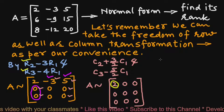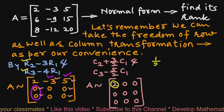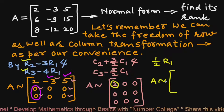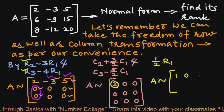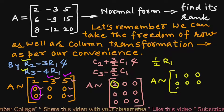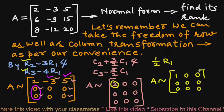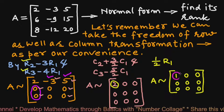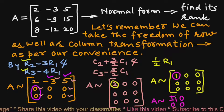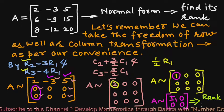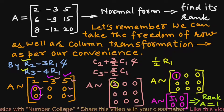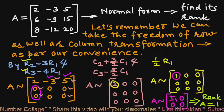Now our task is to convert this 2 into 1. For that we perform the elementary transformation (1/2)R1, which gives the equivalent matrix A as [1,0,0; 0,0,0; 0,0,0]. This is the form I1 O O O, which implies the rank of A is 1. This is how we find the rank of a given matrix by converting it into normal or canonical form.